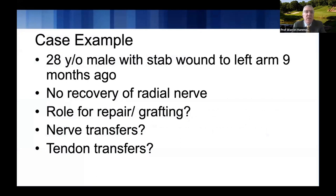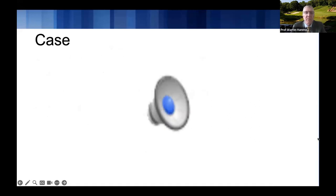I'd like to start with a case example. This is a 28-year-old gentleman with a stab wound to the left upper arm about nine months ago, left with a radial nerve palsy. So how do you decide what to do? What's the role for nerve repair, nerve grafting, nerve transfers and tendon transfers, and how do you figure out what you need to do to help this patient and restore their function?